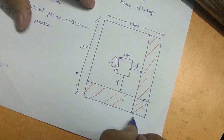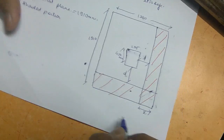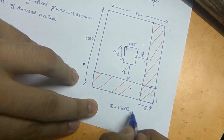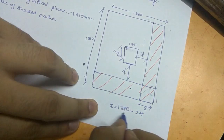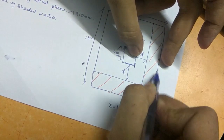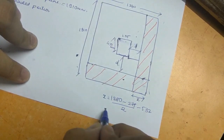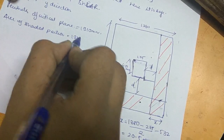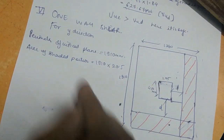For the Y-direction, the area of the shaded portion requires calculating length x: x = (1380 − 275)/2 − 532 = 20.5 mm. The area of the shaded portion is therefore 1910 × 20.5 mm².